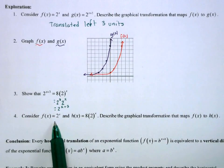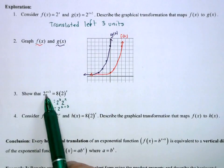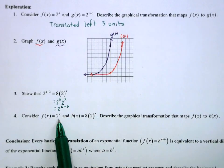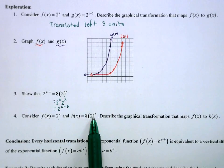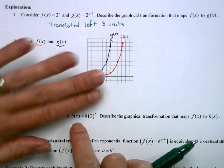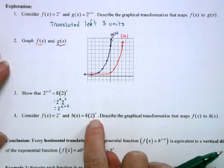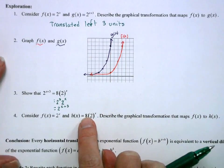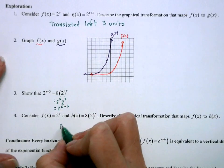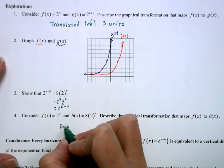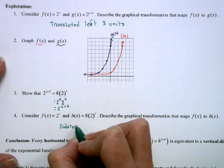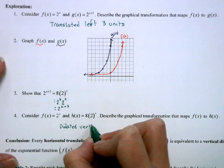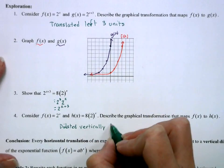This and this are equal to each other. So if I have 2 to the x and 8 times 2 to the x, if I were ignoring what I just did and I had 2 to the x and I said, what's that transformation? Well, if I'm multiplying on the outside by 8, that means it's going to be dilated vertically by a factor of 8.